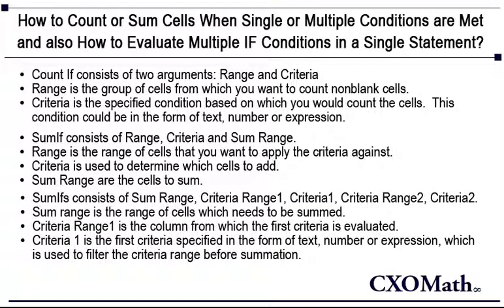Similarly, SUMIFS facilitates multiple conditions. SUMIFS consists of sum range, criteria range 1, criteria 1, criteria range 2, criteria 2, and this goes on until 127 criteria ranges and 127 criteria. Sum range is the range of cells which needs to be summed — it should not consist of blanks or text values as they will be ignored. Criteria range 1 is the column from which the first condition is evaluated. Criteria 1 is the first criteria specified in the form of text, number, or expression, which is used to filter the criteria range before summation. Criteria range and criteria span from 1 through 127.